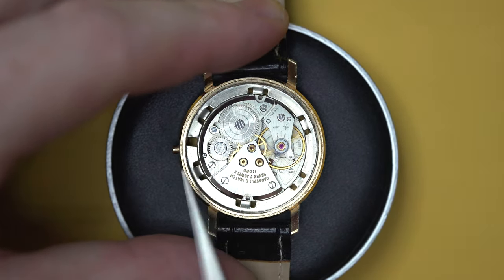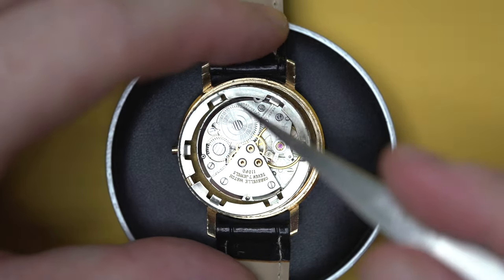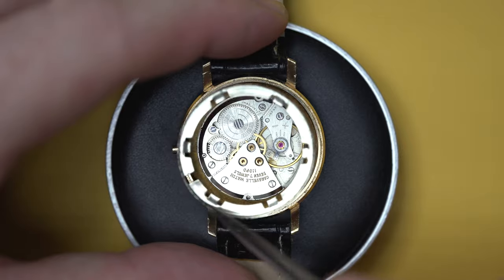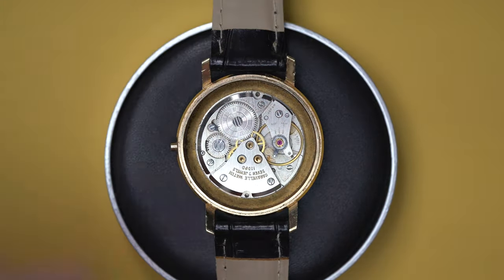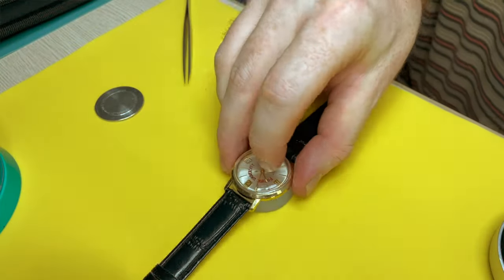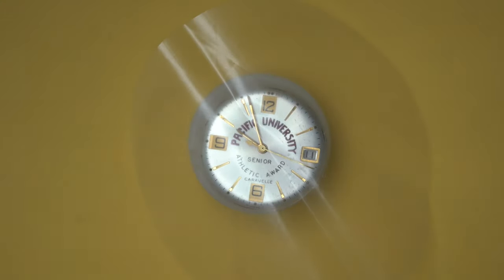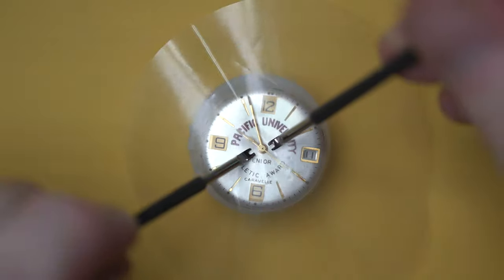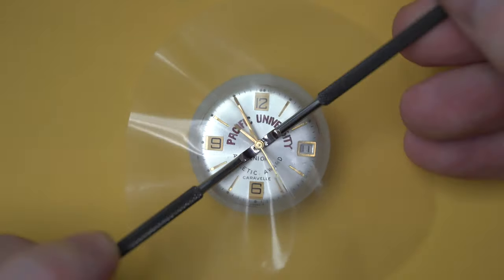Same like normal, I'll take this movement ring out first which secures the movement within the case to stop it from wiggling around. And whilst I do that, let's have a look at Caravelle as a business. A brief Google search - Caravelle actually falls under the Bulova brand. So Bulova being the parent company, Caravelle being a subsidiary of Bulova, a cheaper model really.